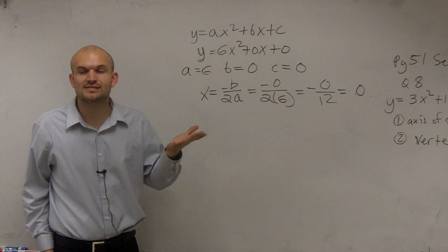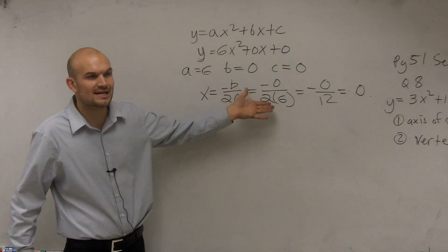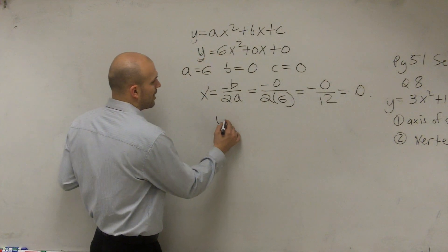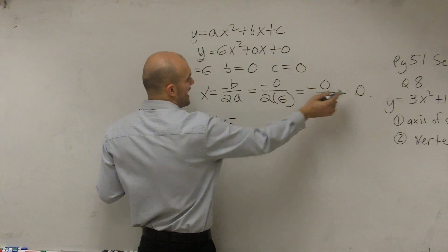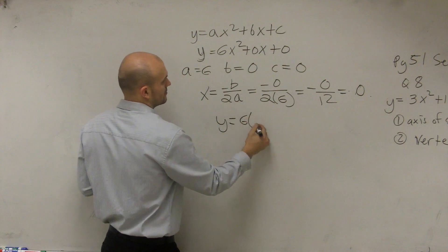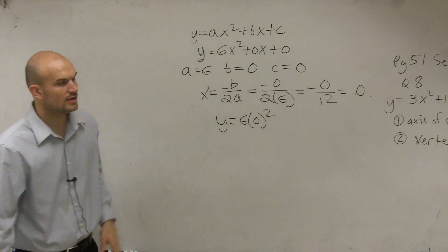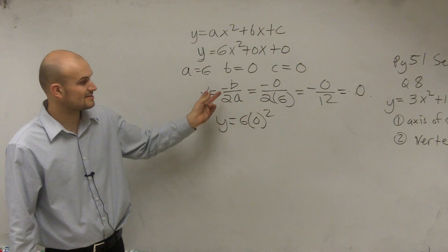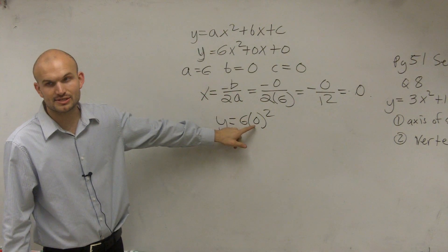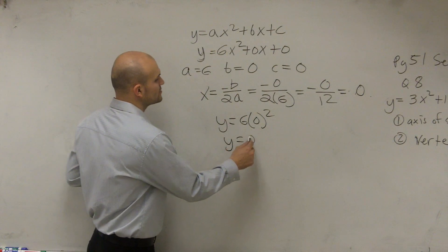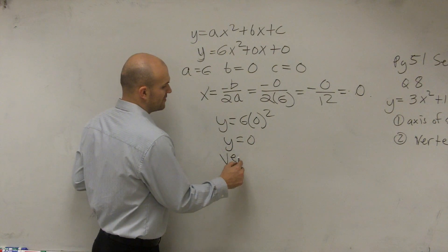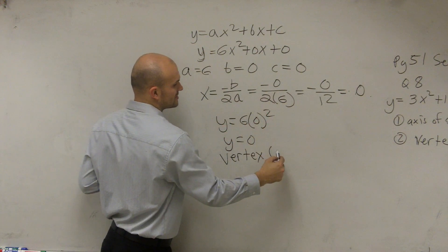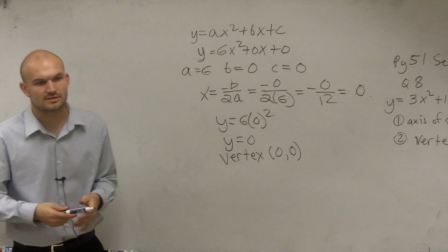Now, the next thing we need to look at is the vertex. Now, remember, this is the x-coordinate of our vertex. So to find the y-coordinate, we simply take y equals, and we plug in the x-value to find our y-value. So since the x-value in the axis of symmetry was 0, we plug in 0 for x, and we solve for y, which means y equals 0. Therefore, the vertex is x equals 0, y equals 0, so it's 0 comma 0. So that's your vertex.